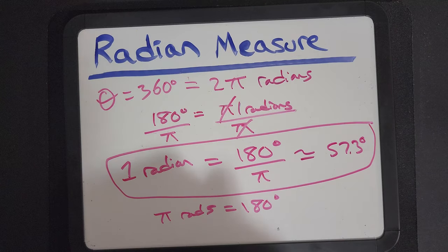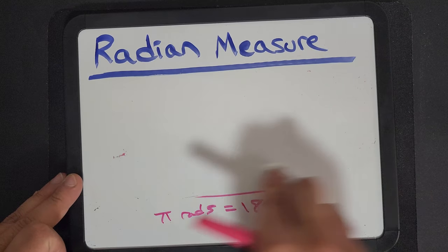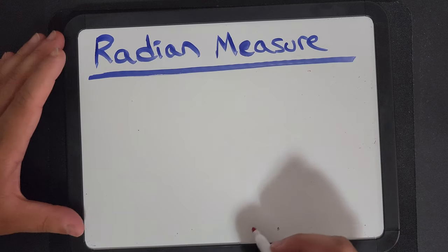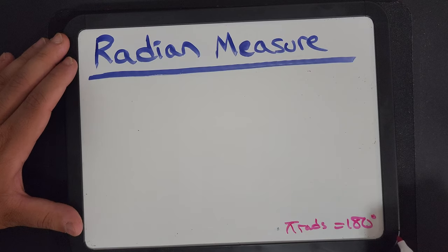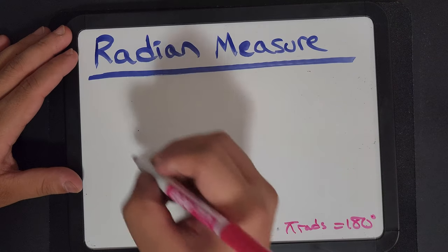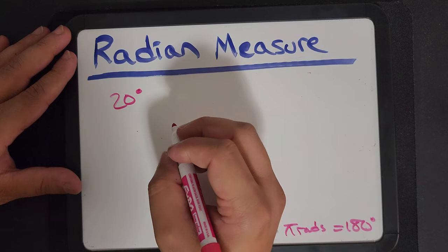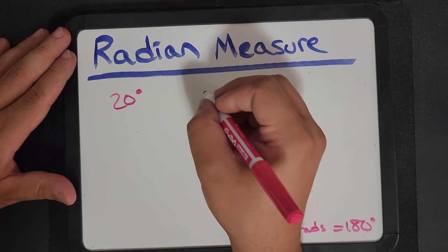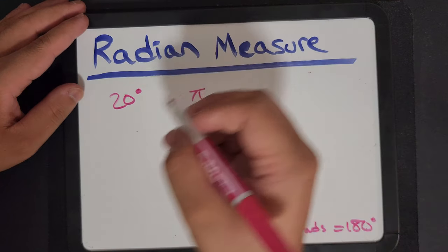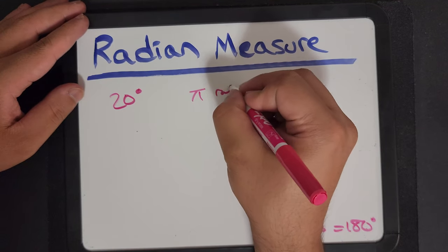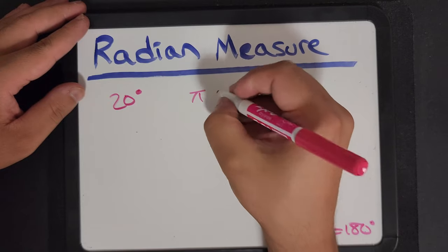So, speaking of converting. Let's tackle that right now. Let me just write that here. 180 degrees. So, let's try converting 20 degrees into radians. 180 degrees. So, if we have π radians, let me write out the whole thing, so we don't get confused.